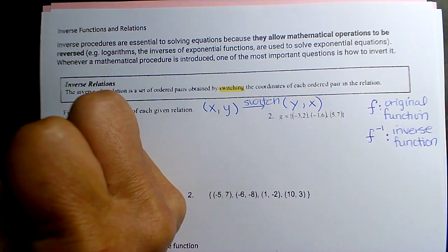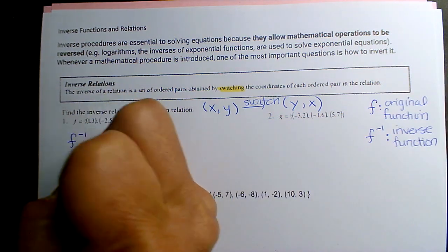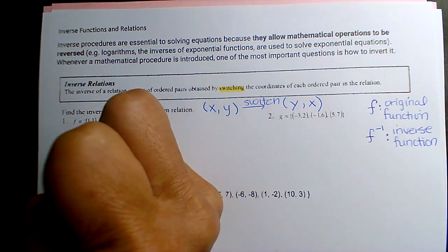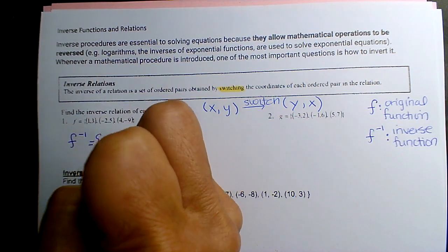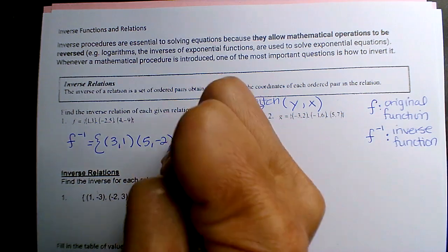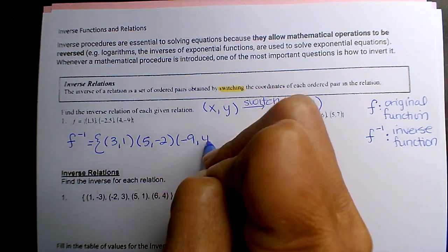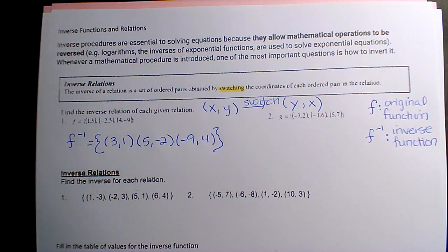So this is F, so F prime, right, inverse F is going to be, so it's going to be three one, five negative two, negative nine four. You just switch, that's it. It's not like addition and subtraction where when you're inverse operating an equation you switch the sign. No, you're exactly just swapping seats, that's it.